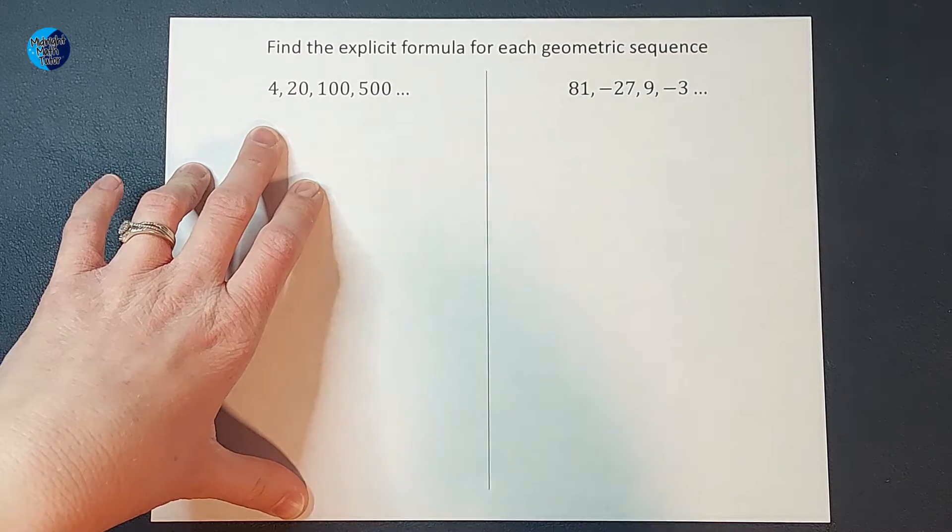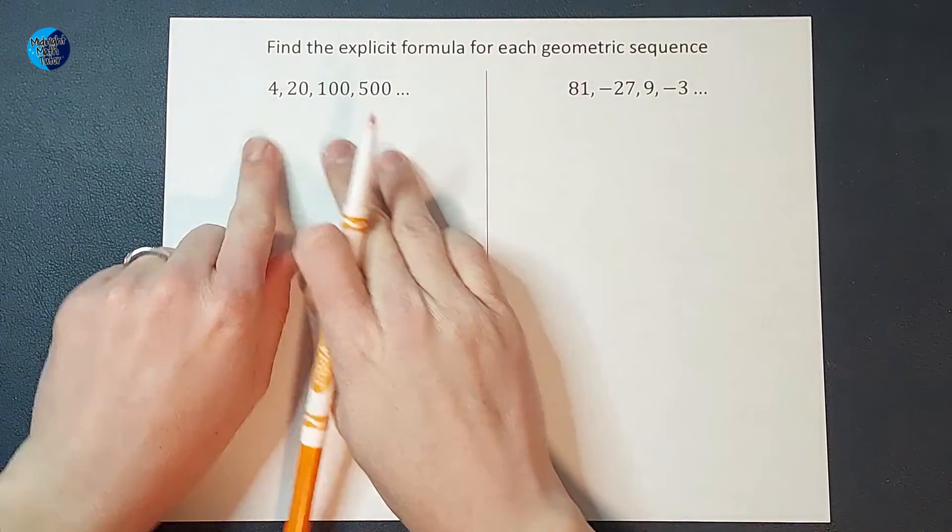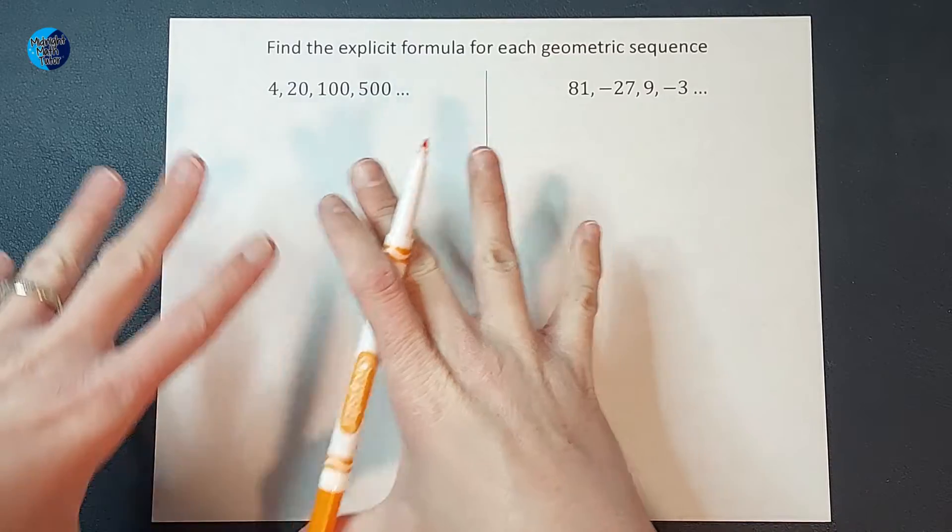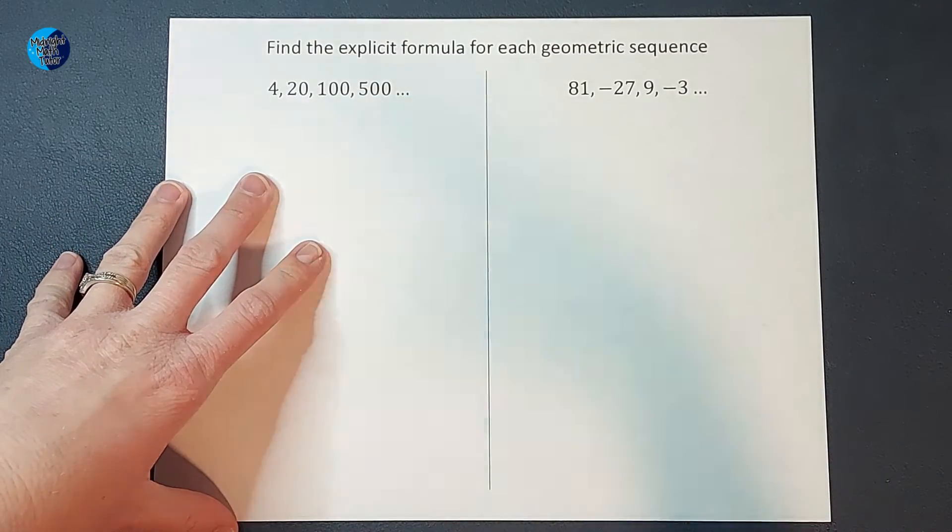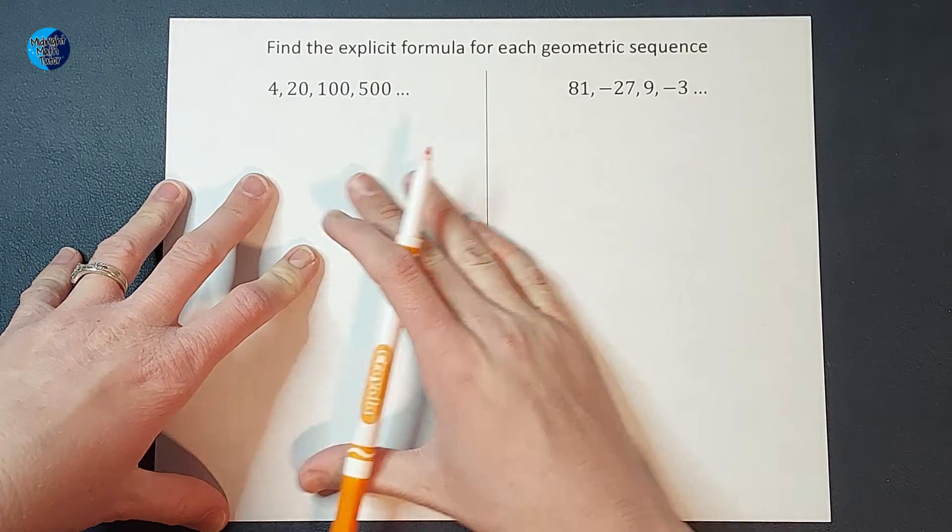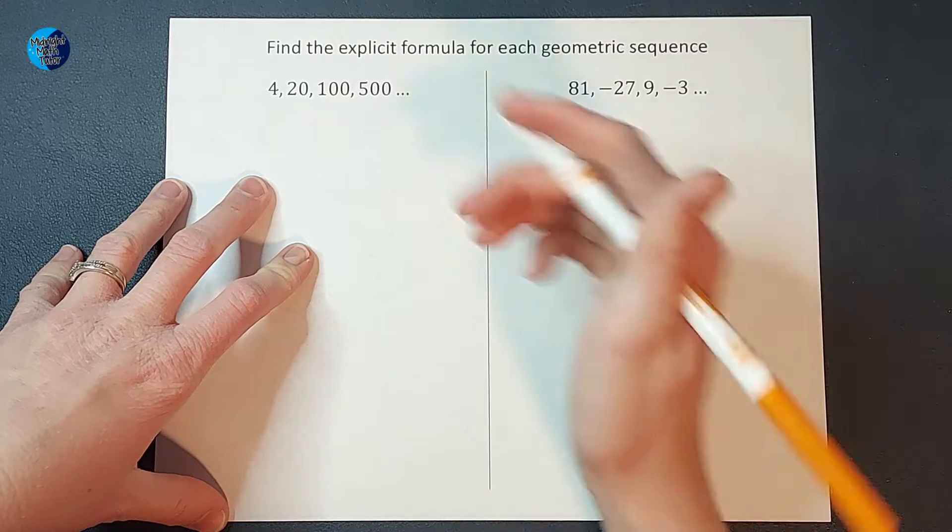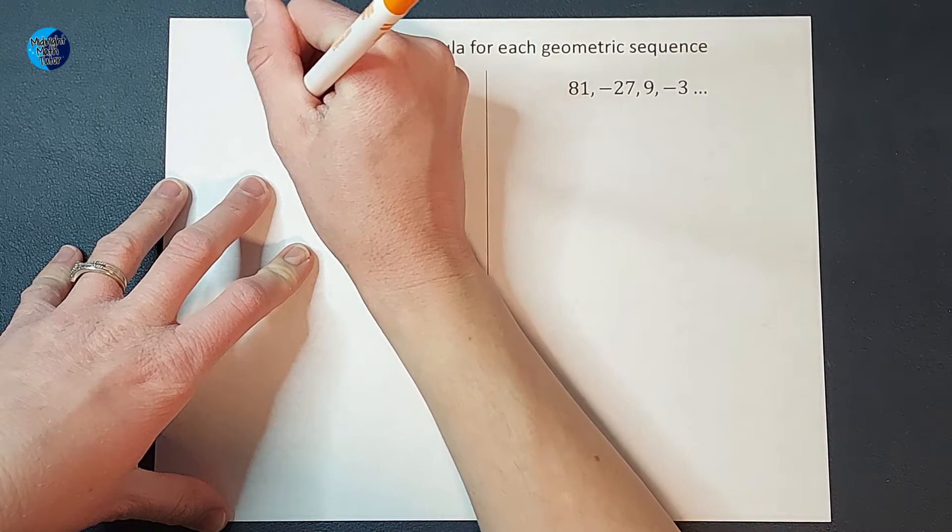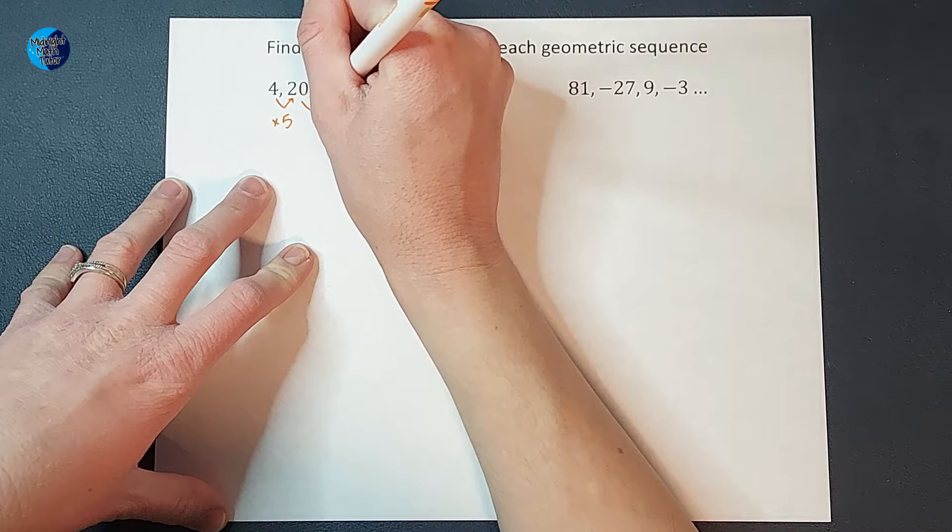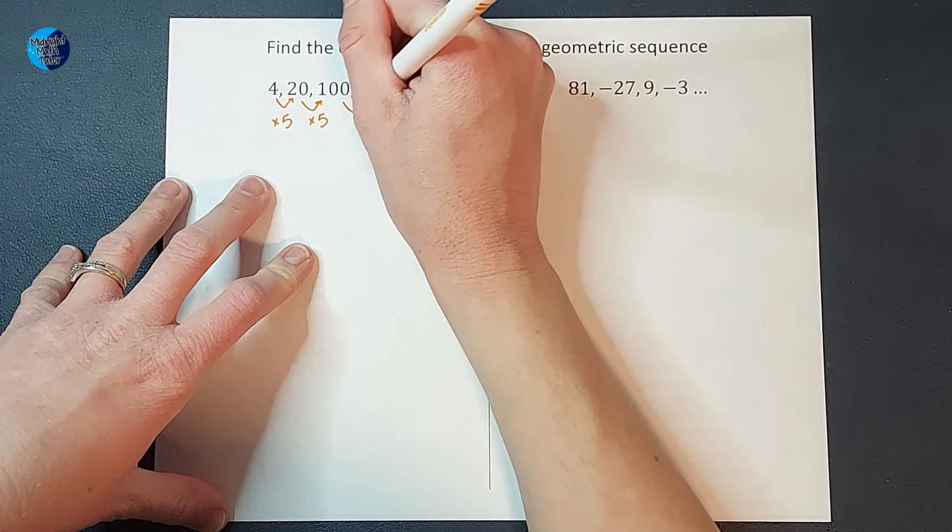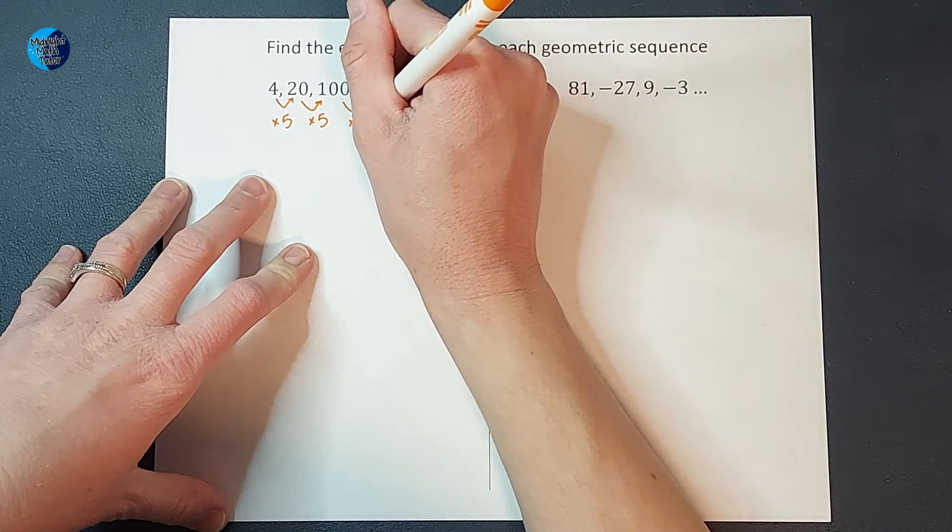All right, the first thing I'm going to do to find this formula is I want to figure out the pattern. These aren't just randomly listed numbers. There's some sort of pattern between them. So when I look at it, I notice that I am multiplying by five each time to get the next number. So great, now I know that.